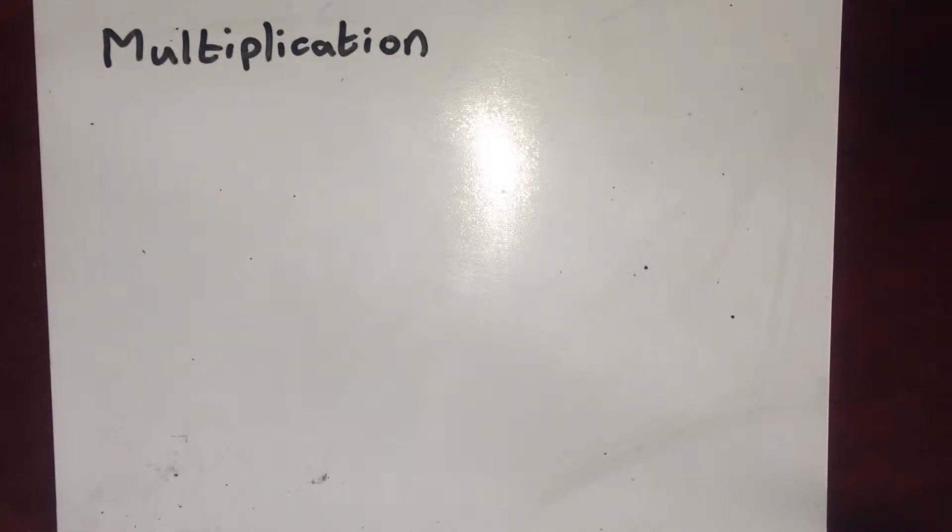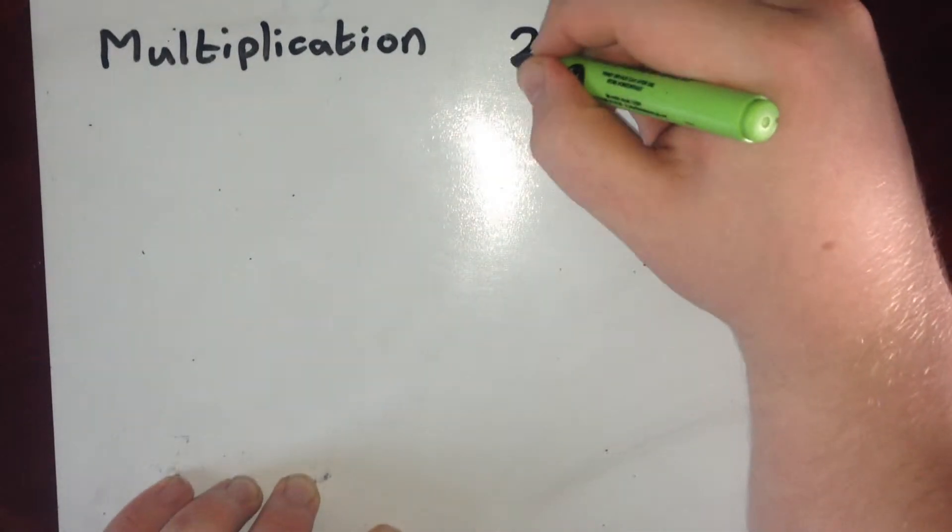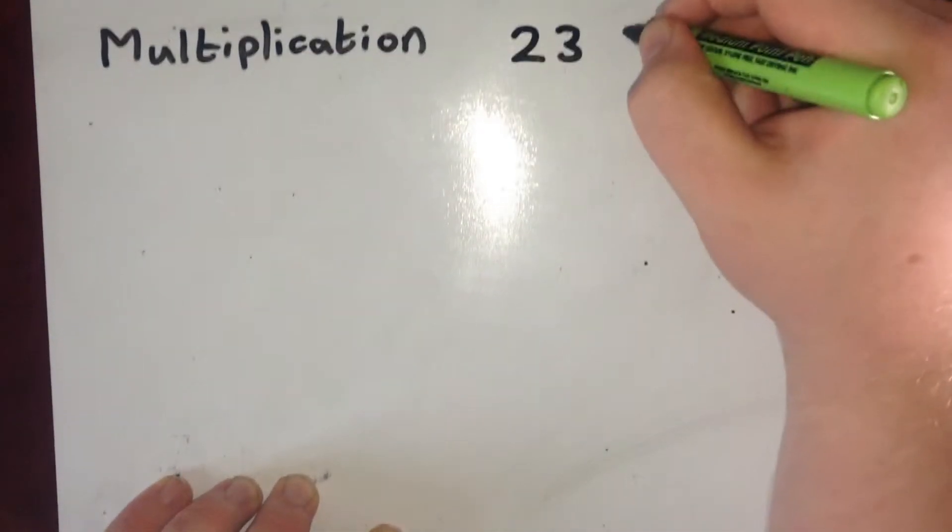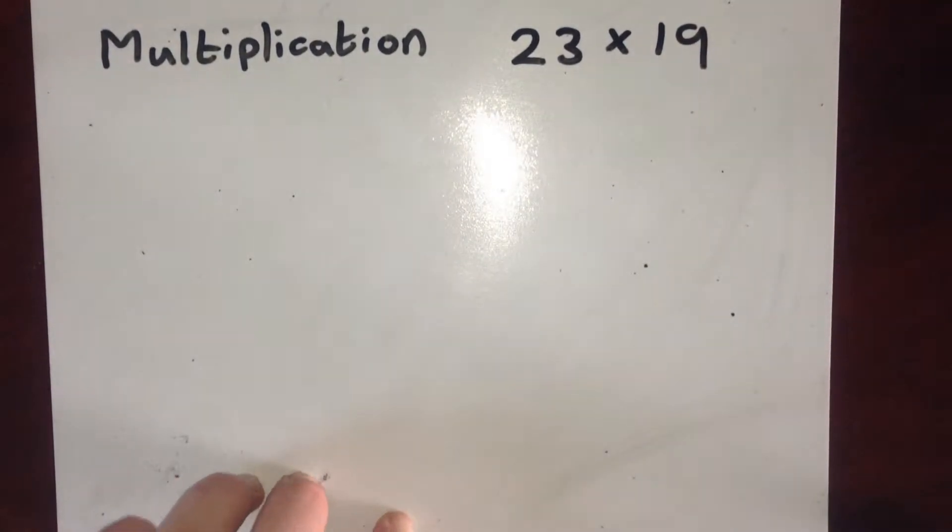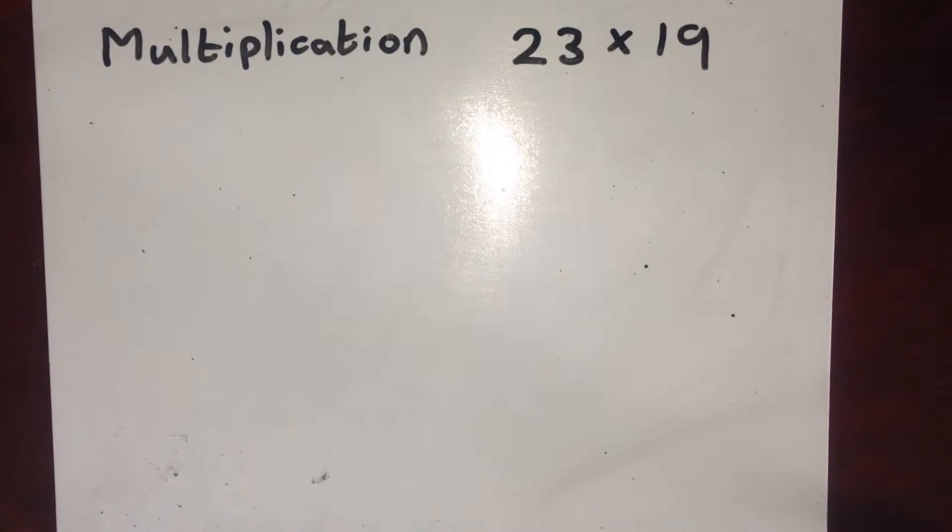Welcome to this video on multiplication. I'm going to work with the multiplication 23 multiplied by 19. I'm going to do this using several different methods of multiplication. I'm going to go through three different methods. These aren't the only ones. There are plenty out there to choose from.